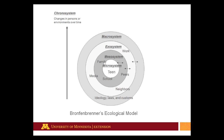Meso systems are the relationships between these micro systems — for example, the relationship between a parent and his or her workplace. The exo system represents influences on a teen that are not necessarily direct but still have an influence, such as friends of the family, whether a teen lives in an urban, suburban, or rural area, and the school he or she attends. The macro system represents the broader community and culture within which a young person is growing and developing.